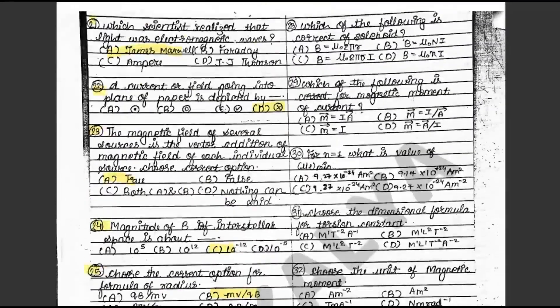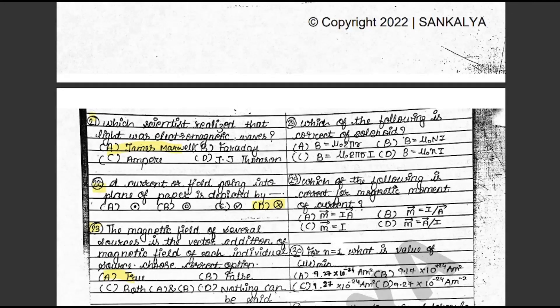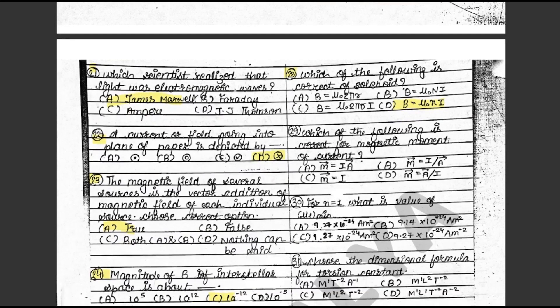Question 28: Which of the following is correct for solenoid? The answer is D: B = μ₀ni. This is on textbook page 153. Question 29: Which of the following is correct for the magnetic moment of current? The answer is A: M = IA. This is on textbook page 158.